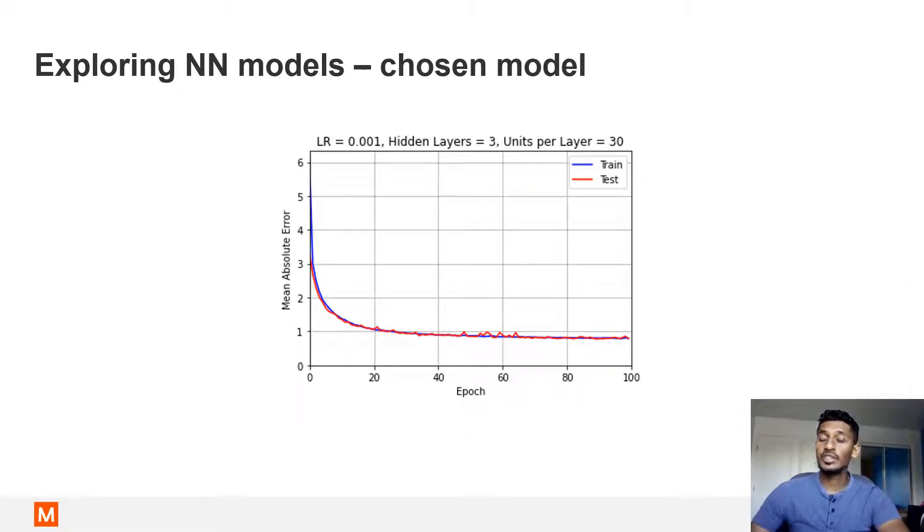This slide shows the convergence of the chosen configuration. The configuration was trained for 100 epochs, and as you can see, 100 epochs is enough to achieve a good convergence for the mean squared error.